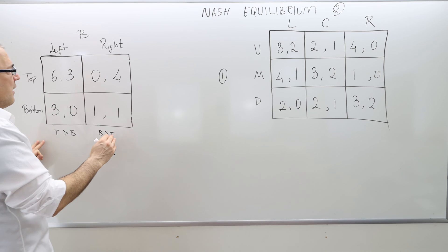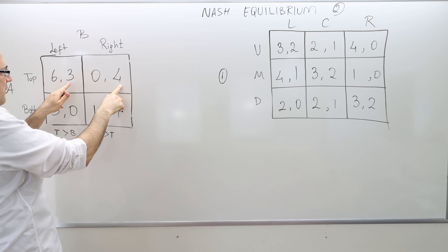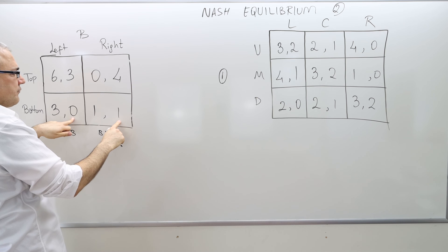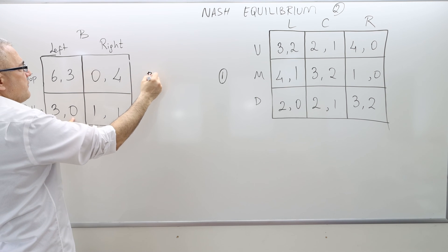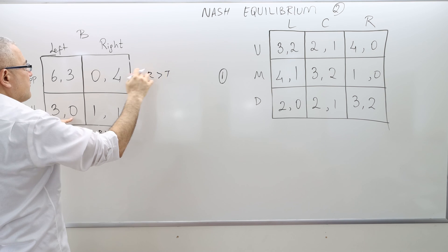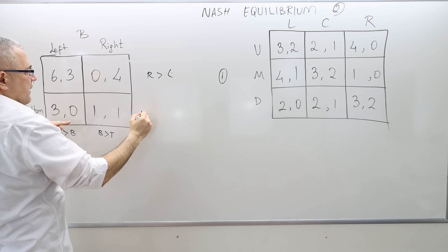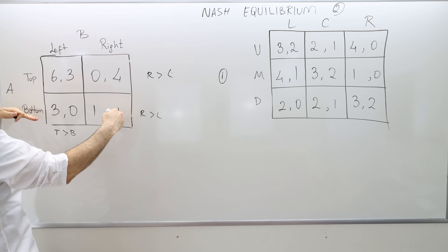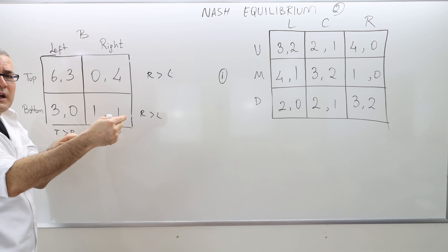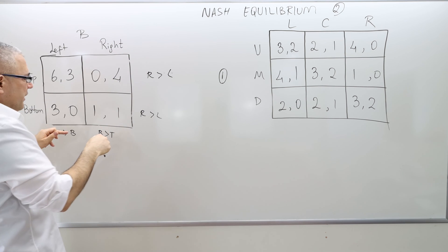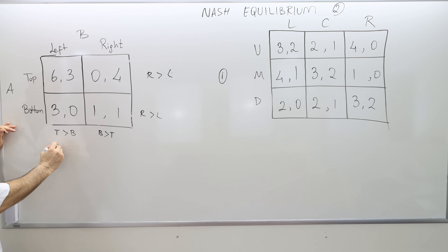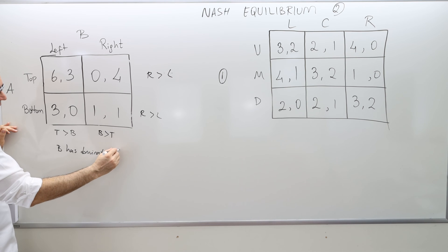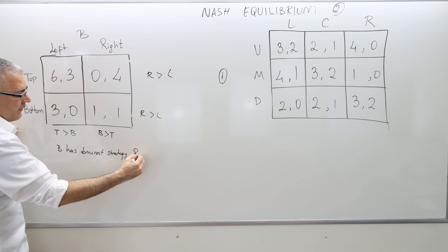What about player B? For player B, because he is the column player, I compare the second numbers across columns. 4 better than 3, 1 better than 0. So right is better than left, and right is better than left — right is always better than left. Whatever your opponent does, whether top or bottom, doesn't matter; right will always give you strictly higher payoff. So therefore, player B actually has a dominant strategy, which is playing right.